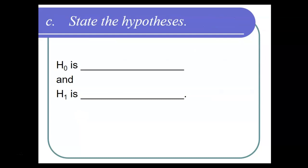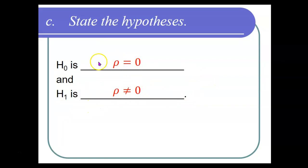Step C is to state the hypotheses — this is always going to be the same for correlation problems. The null hypothesis is always rho equals zero, and the alternative hypothesis is always rho does not equal zero. Those are always your null and alternative hypotheses when testing the significance of the correlation coefficient.